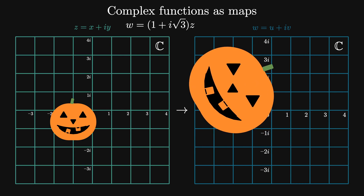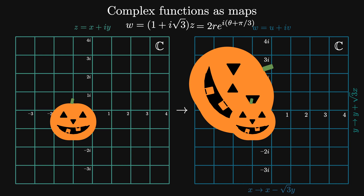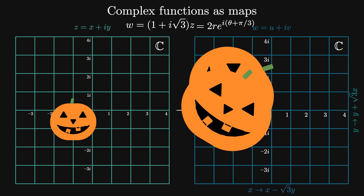Let's think about this map in two different ways. First, we can think about this as a pair of functions: x goes to x minus root 3y, and y goes to y plus root 3x. Or, we can think about this transformation in polar coordinates. z goes to z times 1 plus i root 3 equals 2z times e to the i(theta plus pi/3). If we think about z in its polar form, f of z equals 2r times e to the i(theta plus pi/3) is a global rescaling by 2 combined with a rotation by pi over 3.